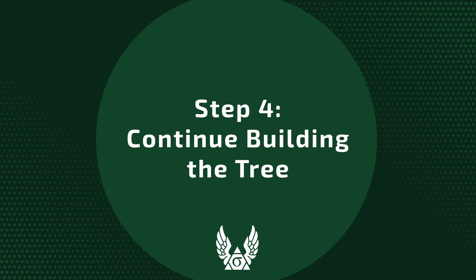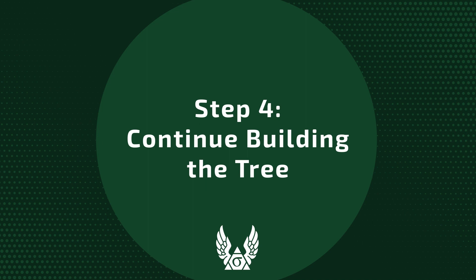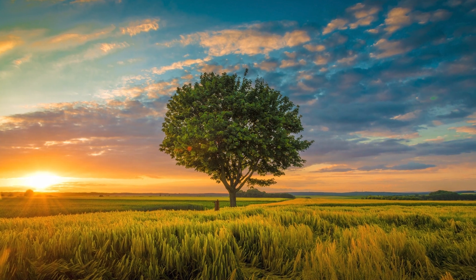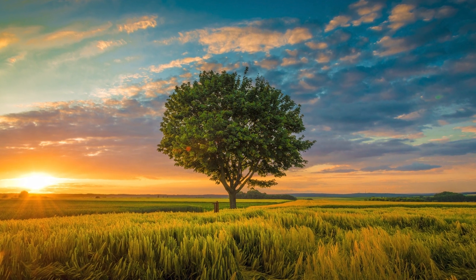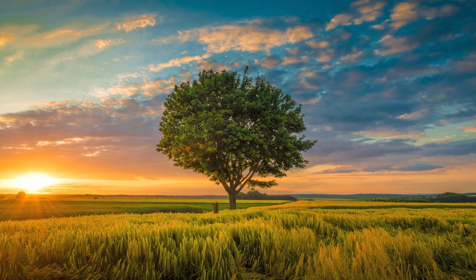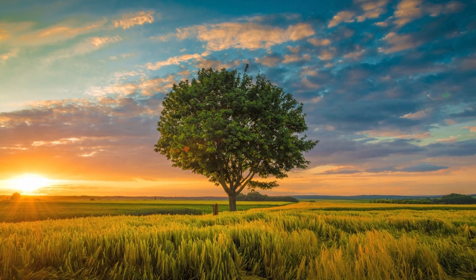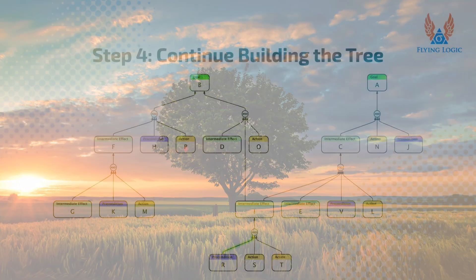Step 4: Continue building the tree. Each of the intermediate effects in your transition tree must similarly be characterized as complete steps — outcomes of actions and current realities. Often these steps will form a linear sequence, but other times they will diverge into parallel sequences, or will have more complex dependencies.